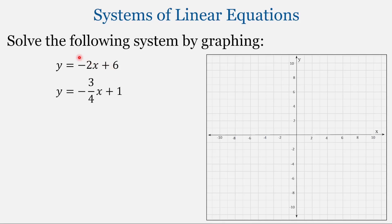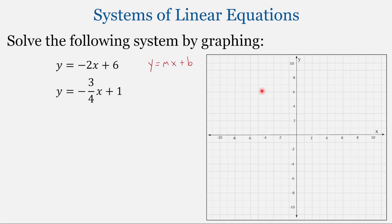Let's look at a few examples. We're going to solve the following system by graphing. Today our equations will be in slope-intercept form, so we can review how to graph lines in slope-intercept form. Slope-intercept form is y equals mx plus b, where m is our slope — the rate of change, giving us rise over run — and b is our y-intercept, where the line crosses the y-axis.